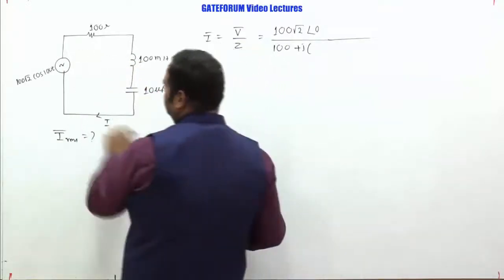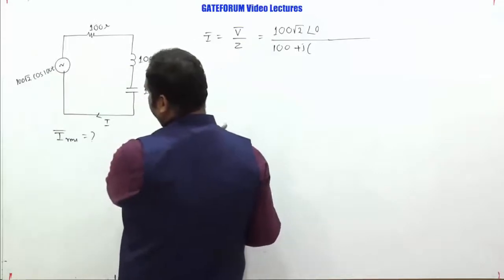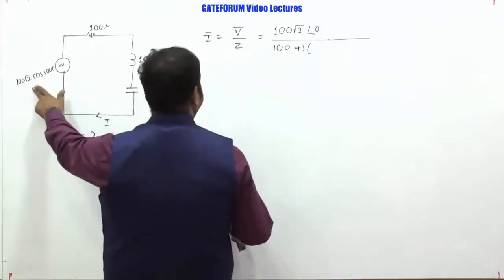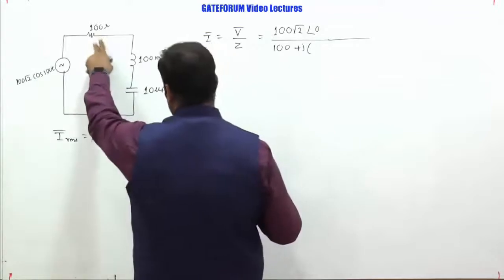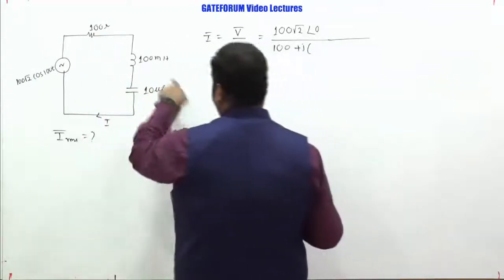So basically this current will be voltage by the impedance. So if I have taken cos as reference, its corresponding phasor notation will be like this, and Z is 100 plus j of omega L minus 1 by omega C.